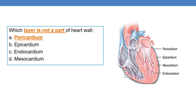Coming to the first question: which layer is not a part of the heart wall? Options are pericardium, epicardium, endocardium, and mesocardium. The correct answer is pericardium. Pericardium is a layer which surrounds the heart — 'peri' means around. It surrounds the heart and is not a part of the heart wall.